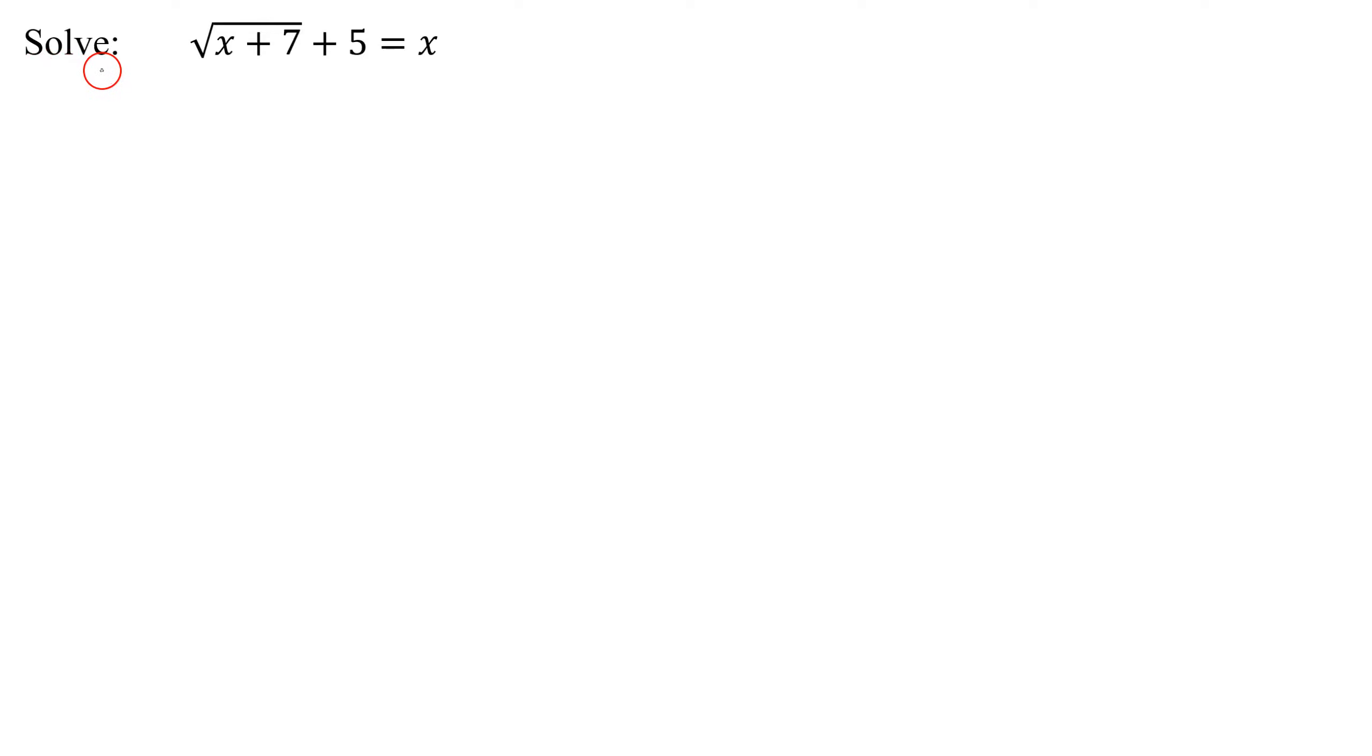In this problem, we need to solve the equation the square root of the quantity x plus 7 plus 5 equals x. What type of equation do I have here? It is a radical equation. I have a square root in it. And how many square roots do I have? I just have one square root.